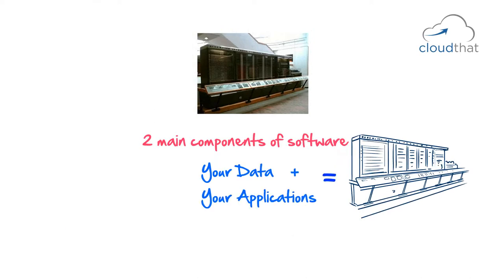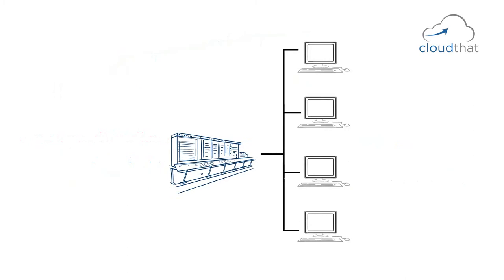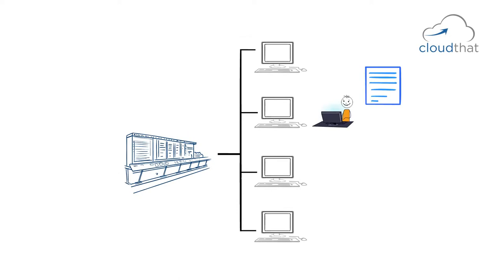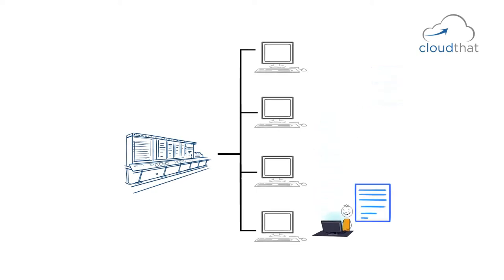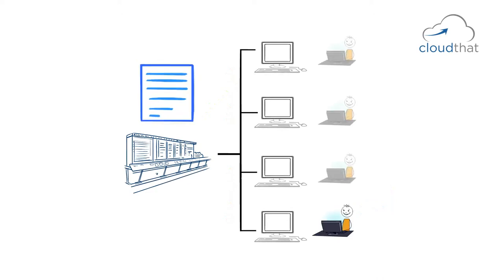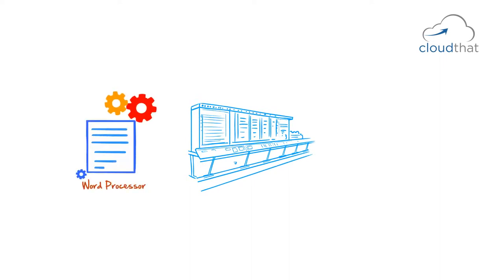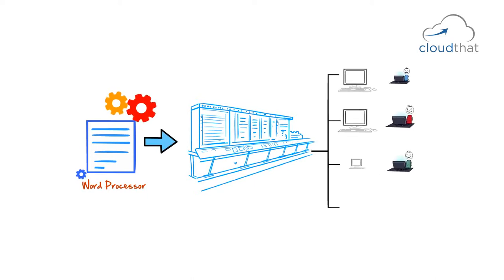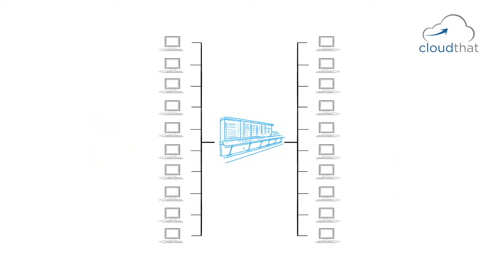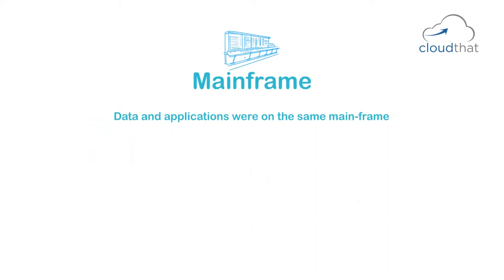There were drawbacks but also advantages to mainframes. Both your data and your applications were on the same machine. You had many dumb terminals where you could log in and access your application. For example, if you were using a word processing application and had to leave, when you returned you could use a different terminal — no data was stored on the terminal itself, it was stored in the mainframe. So no matter where you logged in, the data and application were always there. A mainframe was also a single point of management: to install a word processor, you just installed it on the mainframe and all users got it.